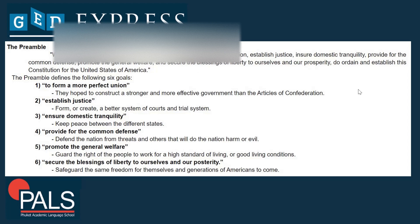Number four, they needed to provide for the common defense. It was important for the United States, a new nation in a world of great power empires, to create an army that could protect them. They also wanted to promote the general welfare — guarding the right of people to work for a high standard of living and good living conditions. And sixth, to secure the blessings of liberty for ourselves and our posterity. Posterity is what we leave behind — they wanted to safeguard the freedoms for their generations, their families to come, and other Americans.